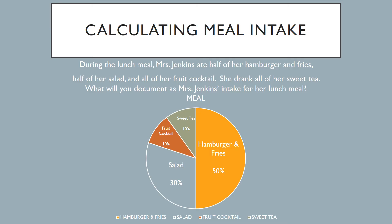If you look at the pie chart — and on your test the pie chart is either just below the question or off to the side — the hamburger and fries portion of the meal accounts for 50% of that meal. The salad accounts for 30%, the fruit cocktail accounts for 10%, and the sweet tea accounts for another 10%. So if you add up all of these percentages, that's 100%.